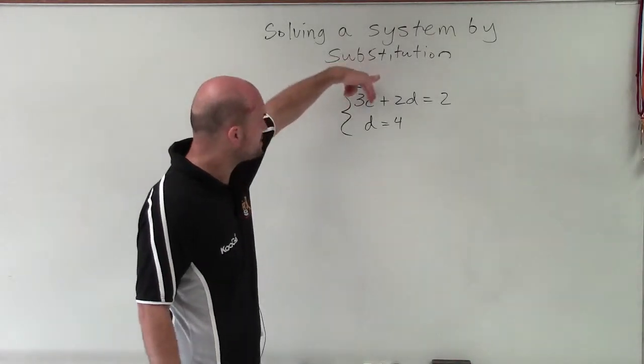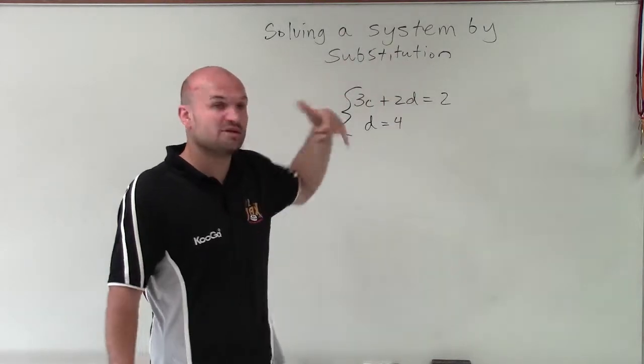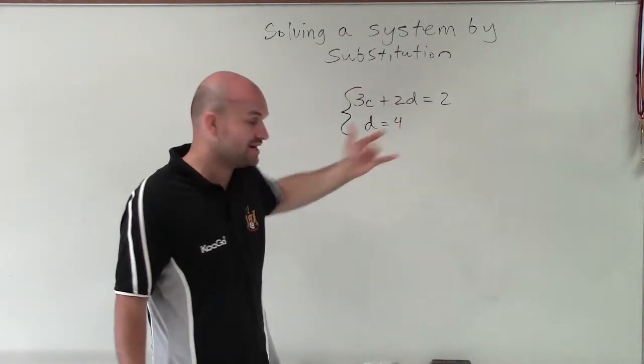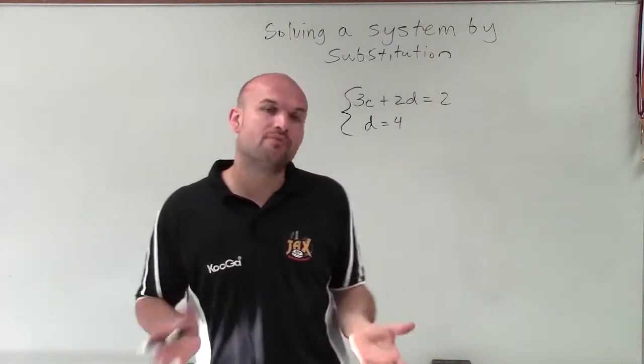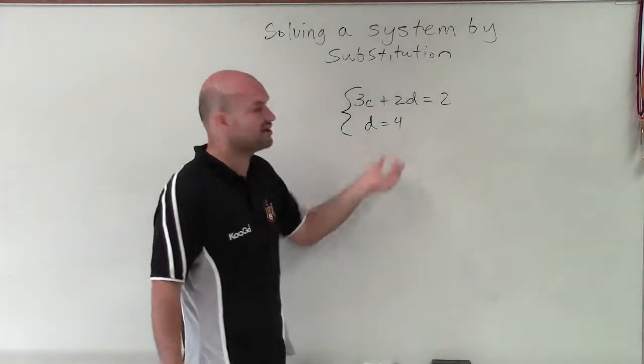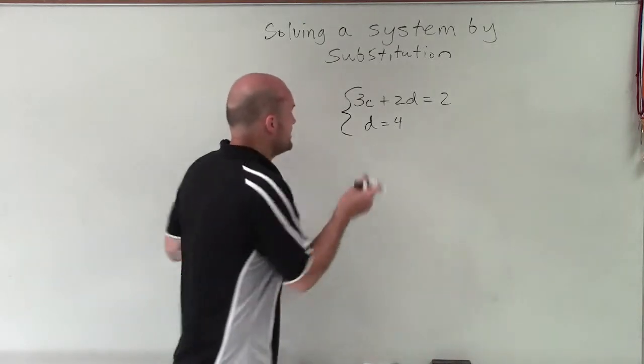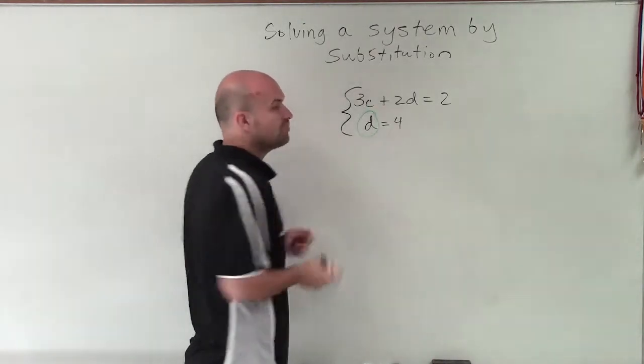We need to find the values for c and d that are going to be true for both equations. So to apply the substitution, I want to make sure that one of my variables is isolated. In this case, you can see my d is isolated, which will be perfect.